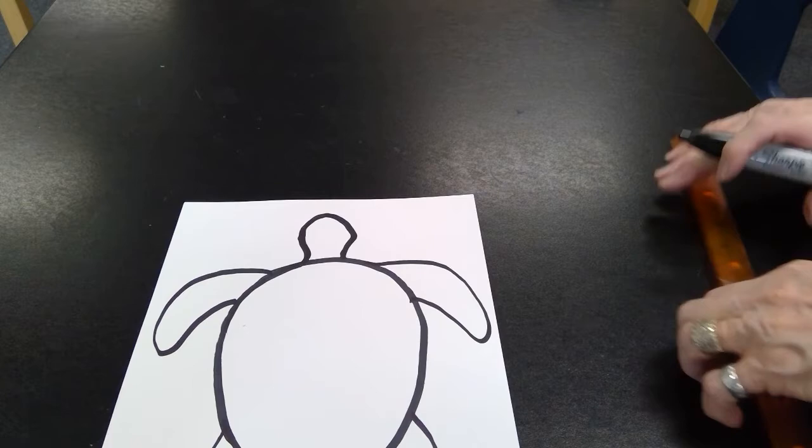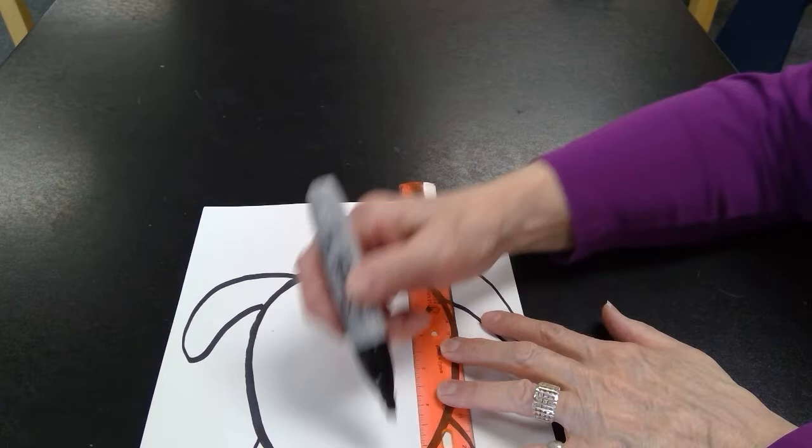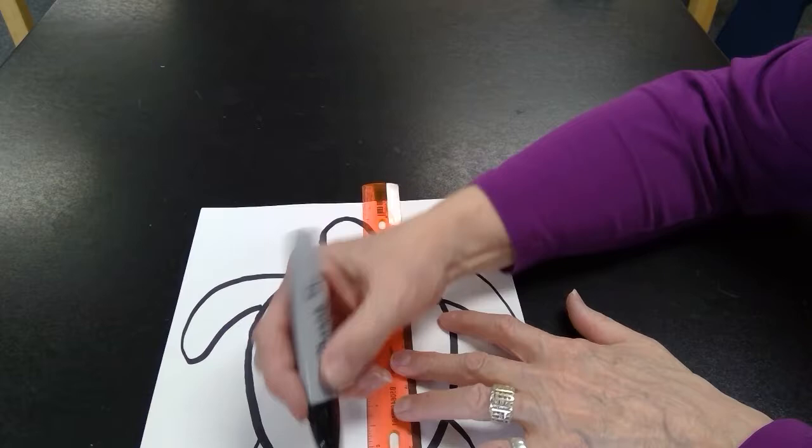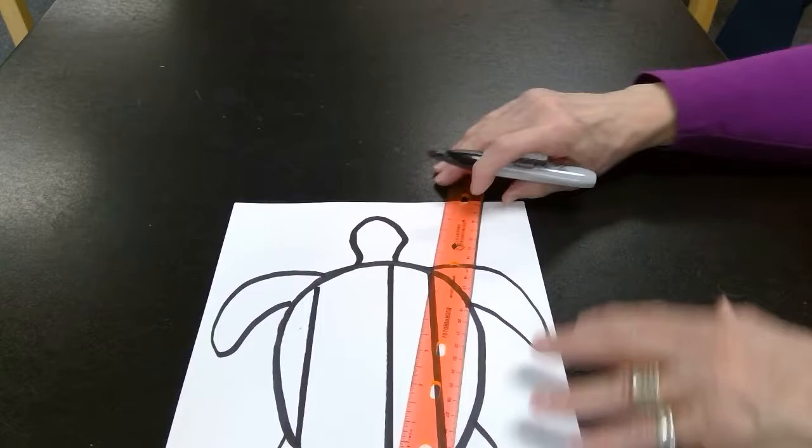Next step, I'm going to take a ruler, and I'm just going to draw lines that go up and down are vertical with my turtle. So with the head to the tail, they're going to be vertical. I don't need to worry about if they're spaced out appropriately or the same. I'm just drawing the lines. They can be various widths with the spaces in between.